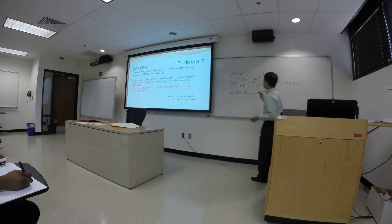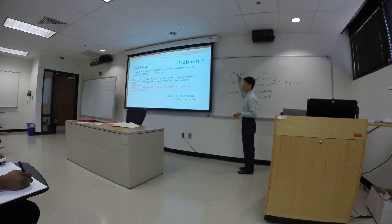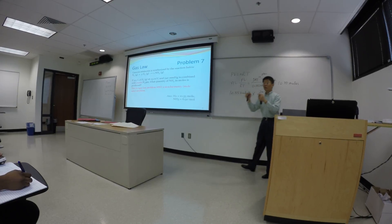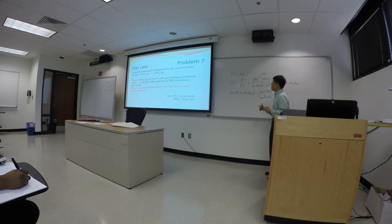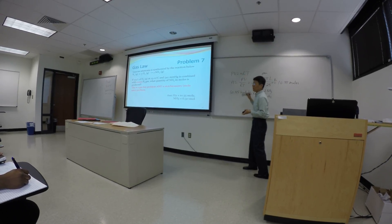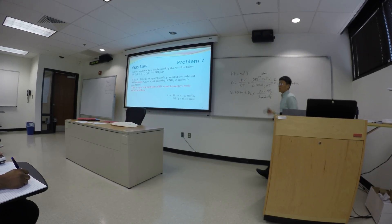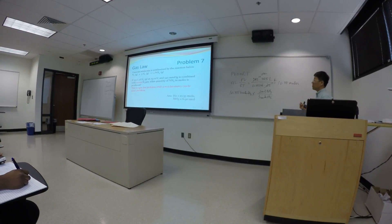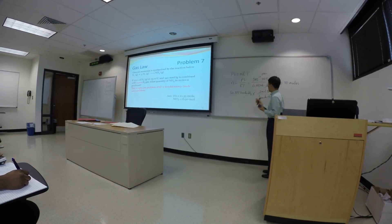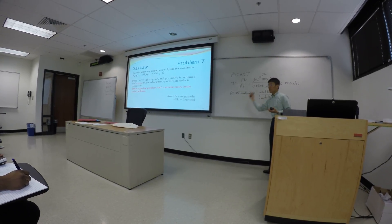This equation, PV equals nRT, is the key to link the number of moles to volume, to pressure, to temperature. This is an equation that you have to remember — you need to know it. Once you know this equation, you can see the relationship: for gas reactions, you can use stoichiometry and figure out the number of moles using that equation.